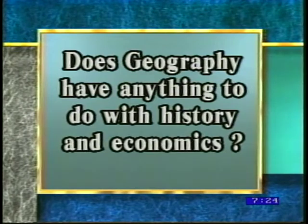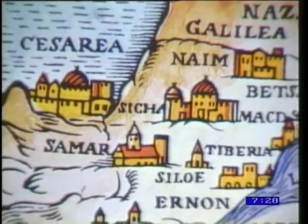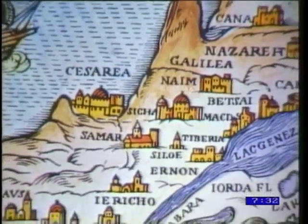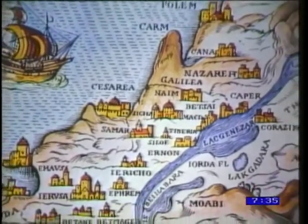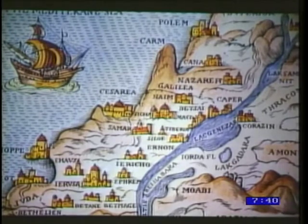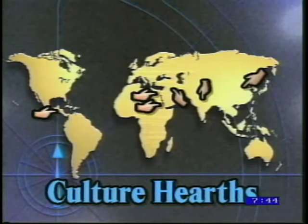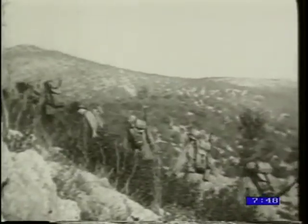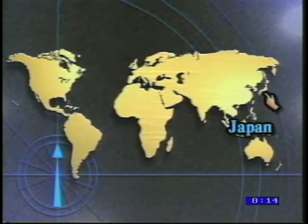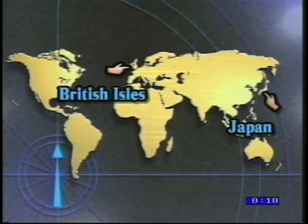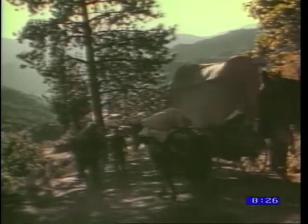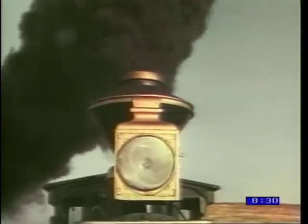Does geography have anything to do with history and economics? Yes, especially human geography. History does not take place in a vacuum — it occurs in some physical setting, many times in direct response to the physical conditions of that specific setting. For example, did you notice that four of the five culture hearts were developed along rivers? Many strategic battles throughout history have been won or lost as a result of the terrain of the battlefield. The extreme cold of the Russian winter was a crucial factor in defeating the Nazi invasion of Stalingrad during World War II. Countries like Japan and the British Isles have rarely been invaded because they were island nations and were difficult to attack. And as with the westward expansion of the United States, the need for more land and resources had a significant impact on both history and economics.